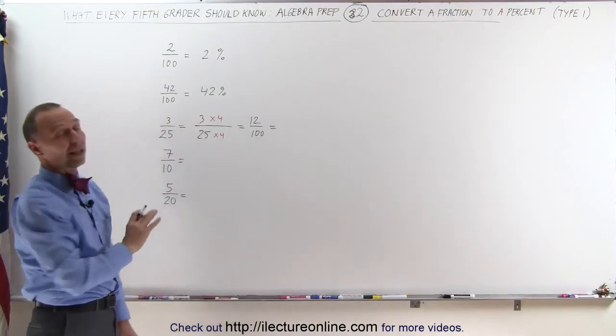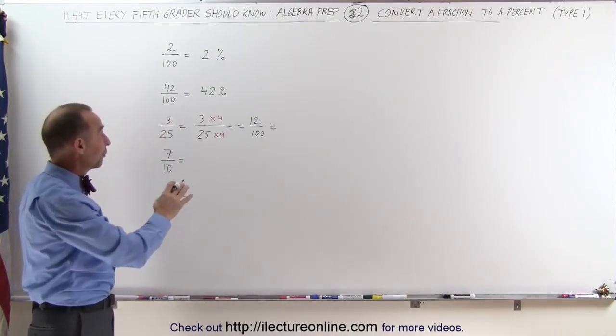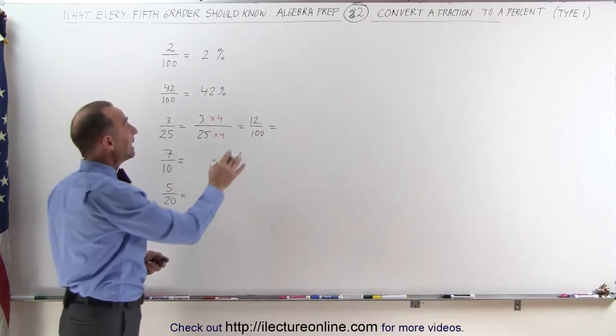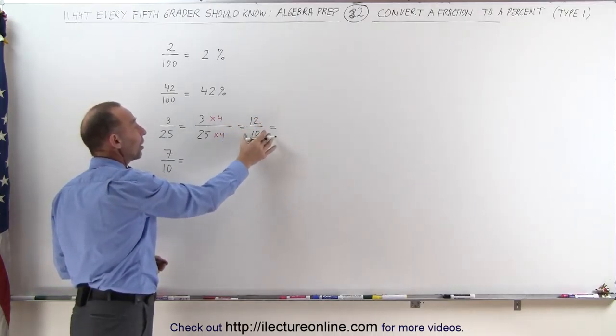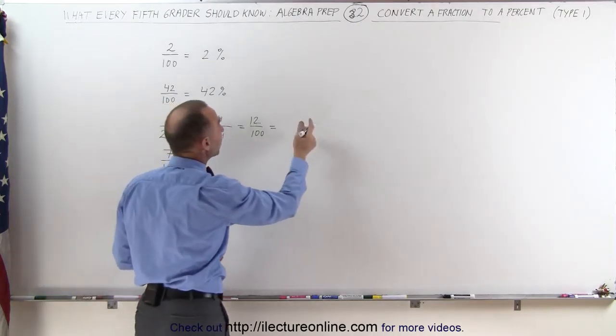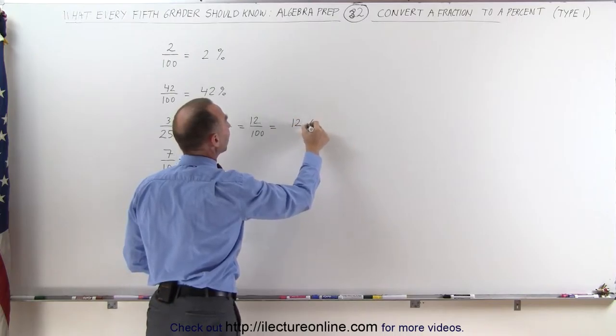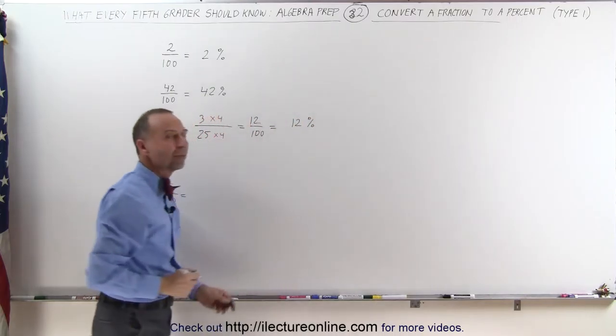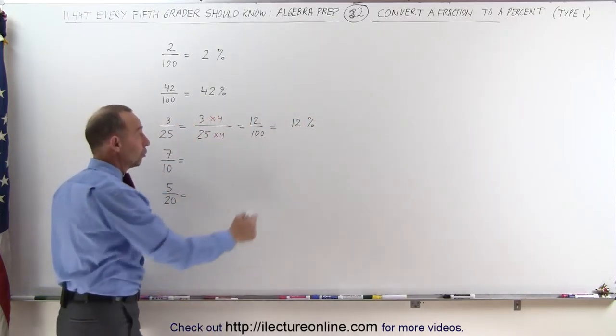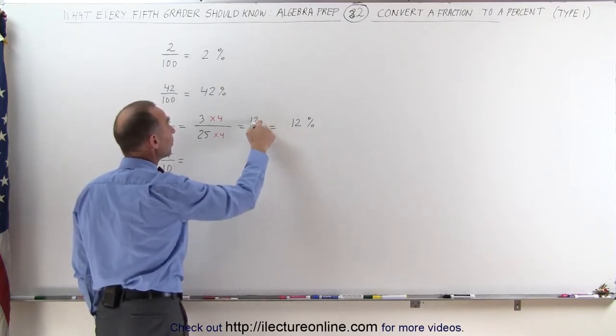Now I'm ready to convert it to a percentage, because any fraction that has 100 in the denominator can simply be converted to a percent by taking the numerator and putting a percent symbol behind it, because 12% does indeed mean 12 divided by 100.